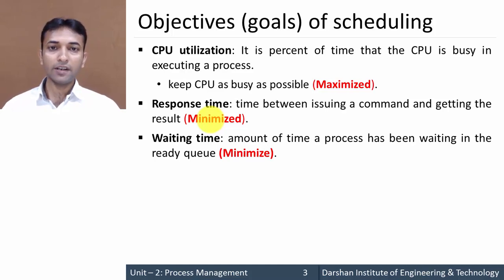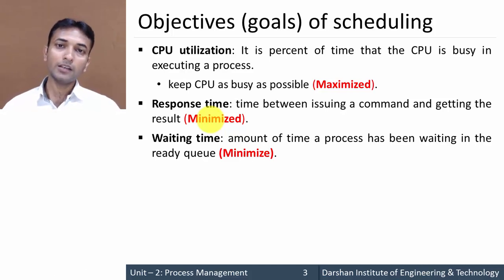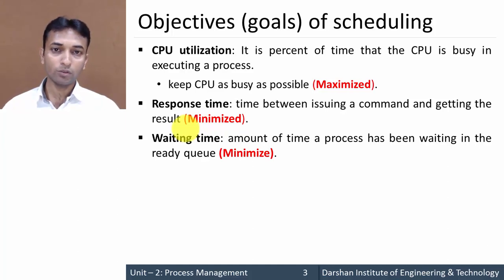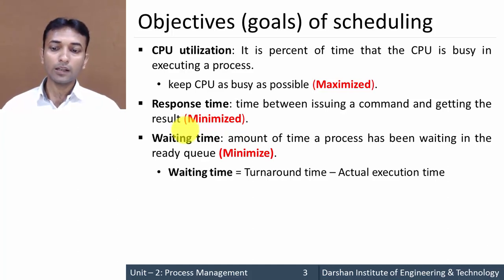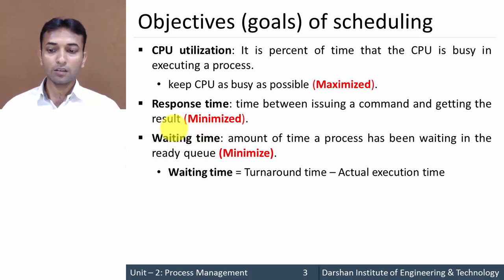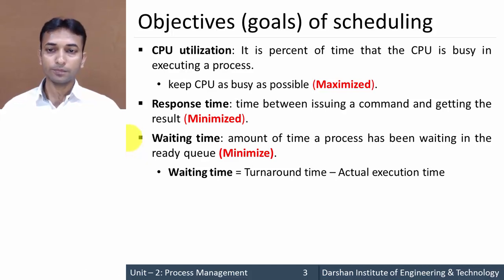The last objective is waiting time — the amount of time a process has been waiting in the ready queue. It should be minimum. The formula is: Waiting Time = Turnaround Time − Actual Execution Time. Please remember this formula as it is used in the next lecture during scheduling algorithms. These are the various objectives or goals of scheduling.